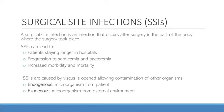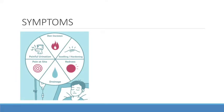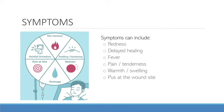The causes of SSIs can be both endogenous and exogenous. However, most SSIs are caused by the patient's own bacterial flora, such that when that organ is opened, the bacteria from inside has a higher chance of contaminating other tissues. The symptoms of surgical site infections may include redness, delayed healing, fever, pain, tenderness, warmth or swelling. A superficial incisional SSI may also produce pus from the wound site.